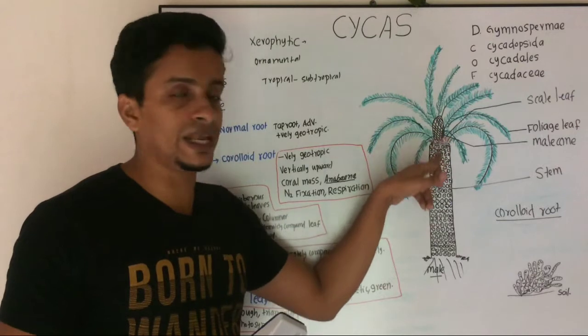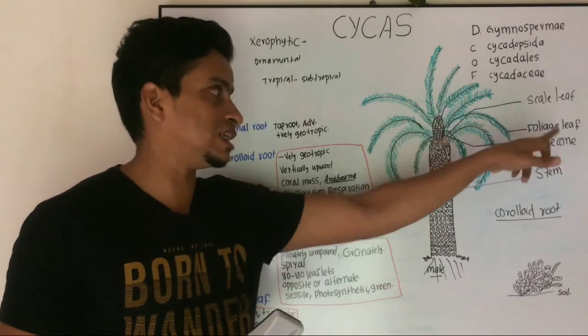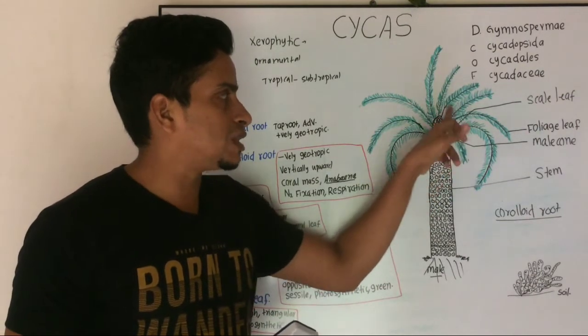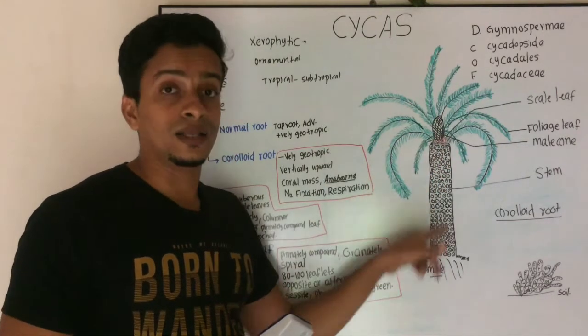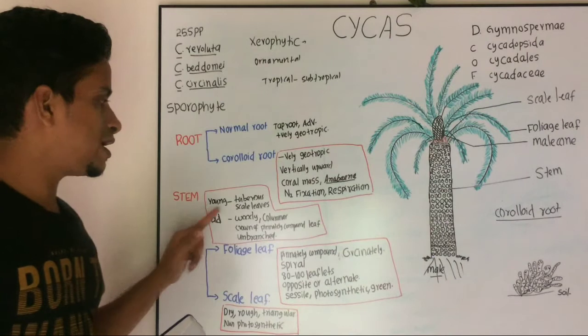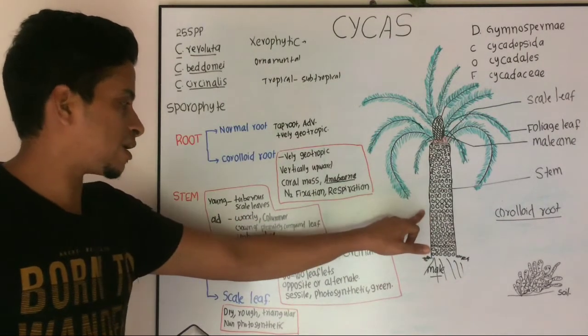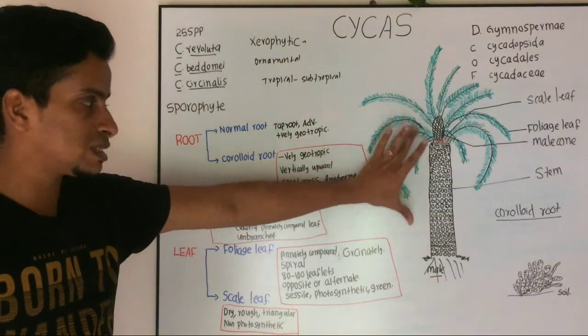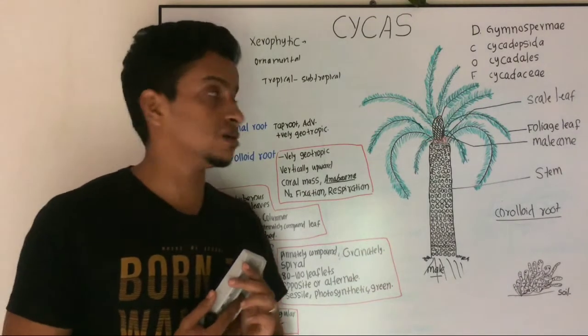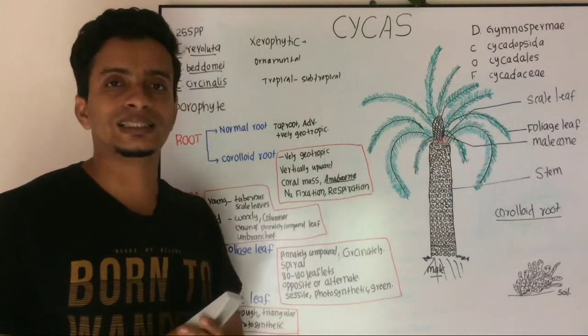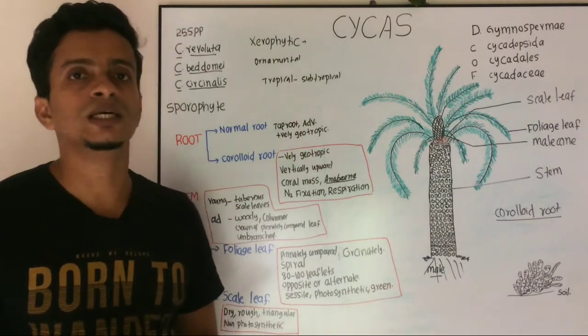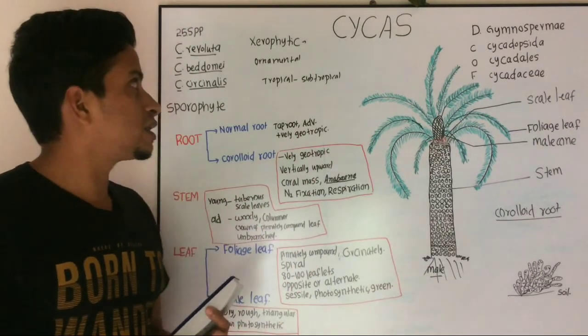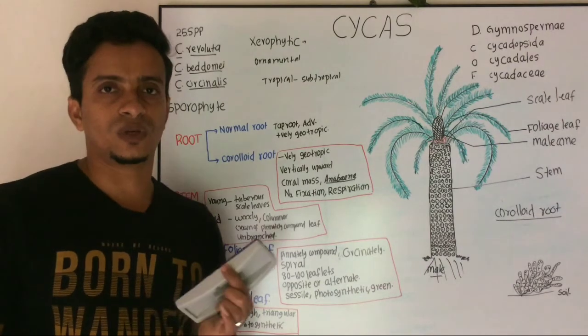This is the male plant, this is the male cone. The scale leaf is the red color, this is the scale leaf. This is the older leaf - woody and columnar - this is the stem. This is the external morphology of the sporophyte of Cycas.